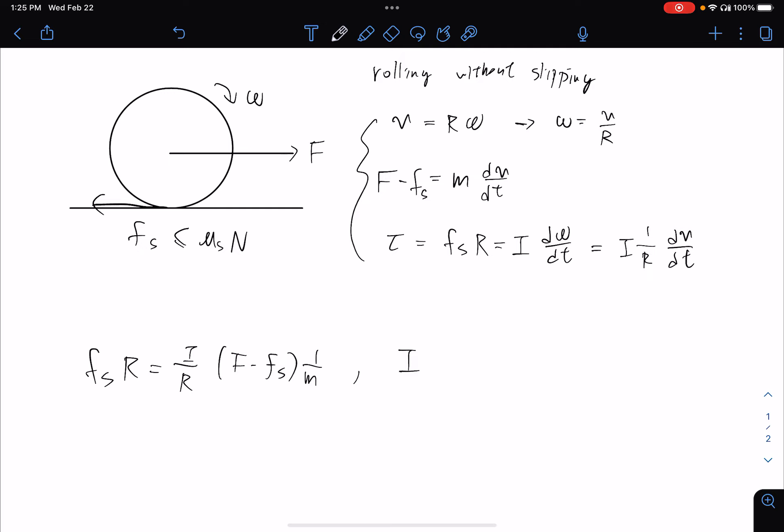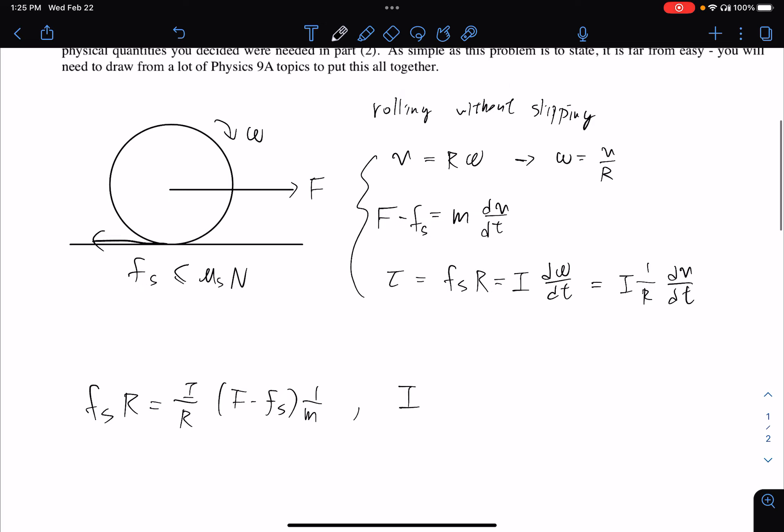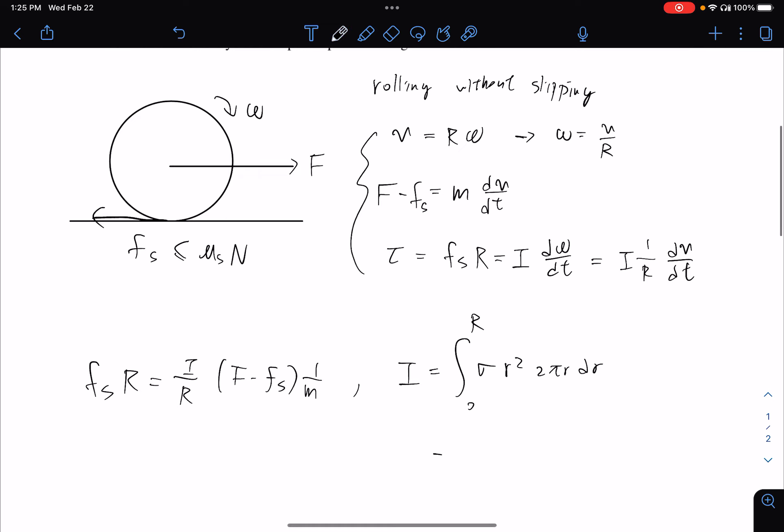Now before we move on, let's plug in the formula for moment of inertia. Moment of inertia of this wheel will be the linear density times r squared, and dm is 2πr dr. So surface density times the small area is dm, and we have r squared from 0 to r.